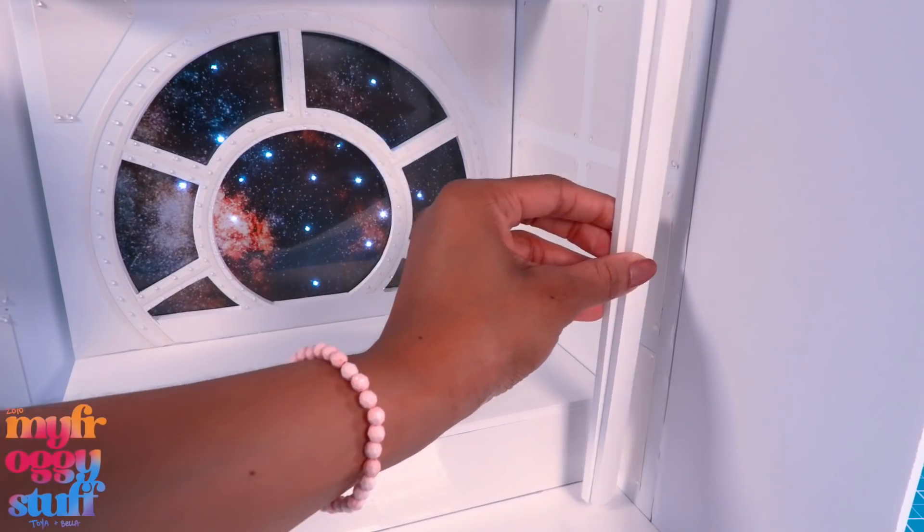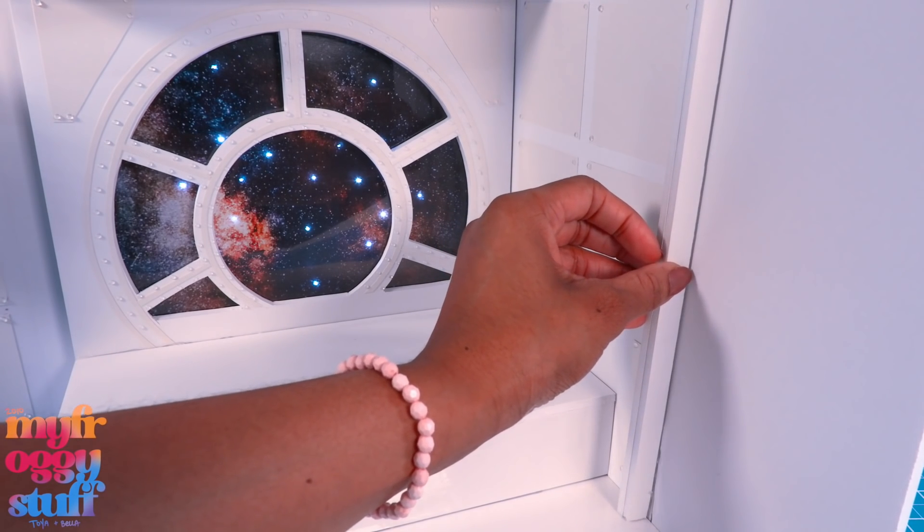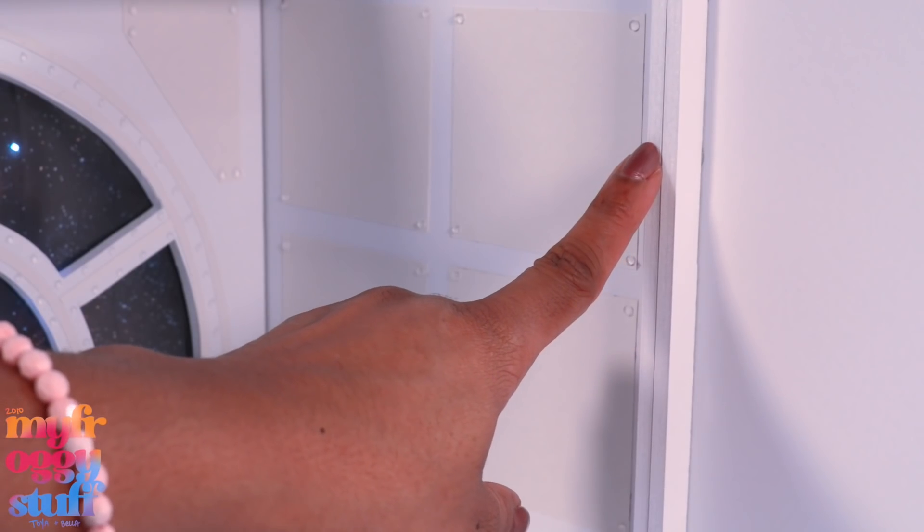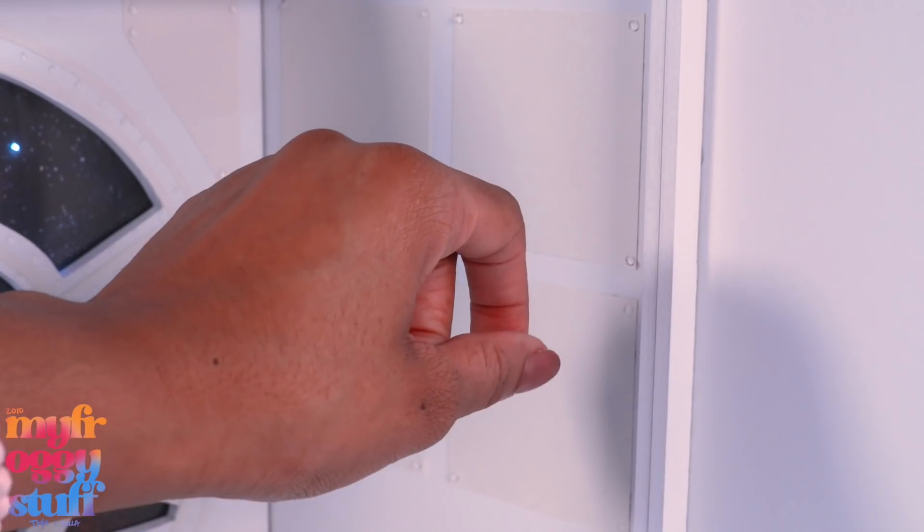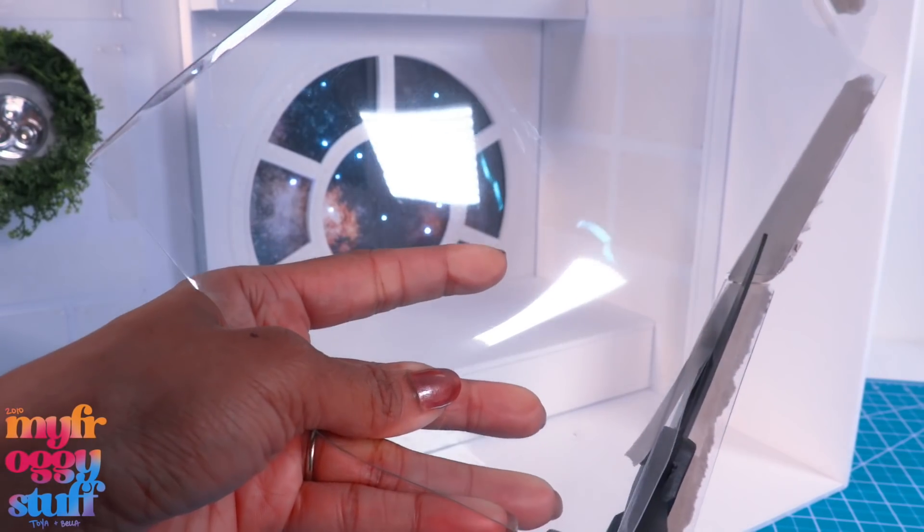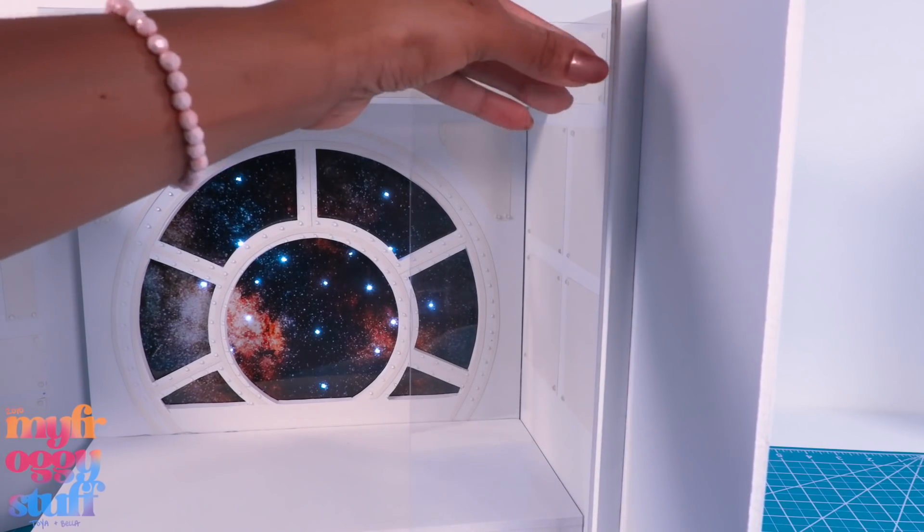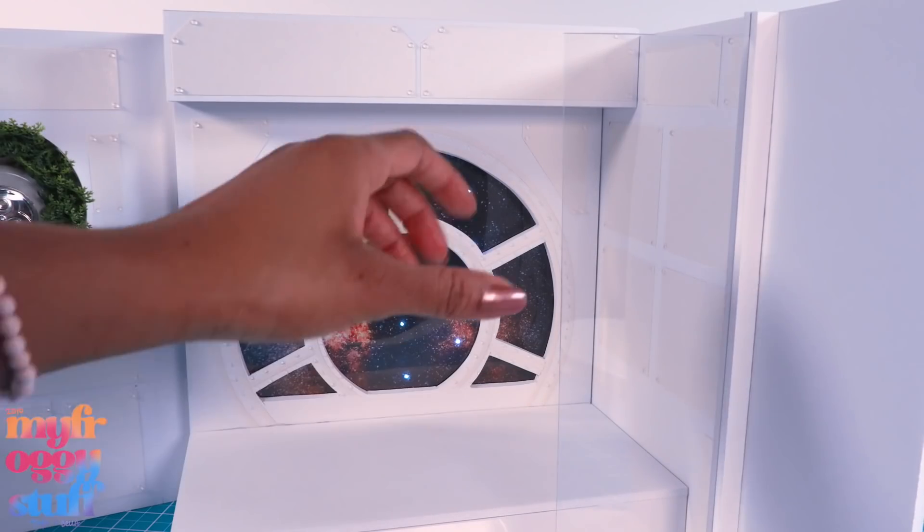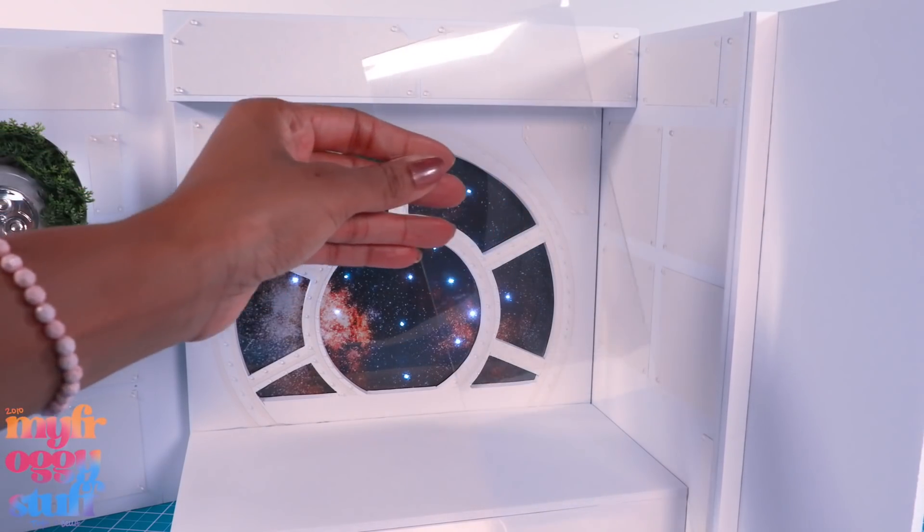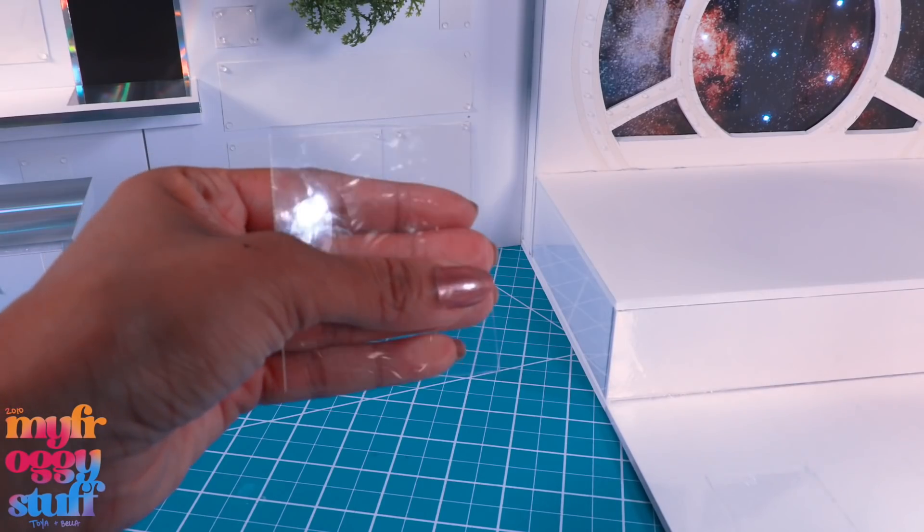I cut two half inch strips of foam board, glue them side by side onto the wall, making sure not to glue the two strips together so we can cut a piece of clear plastic, slide it between the foam board, creating a see-through wall that can be removed. I cut another piece of clear plastic.